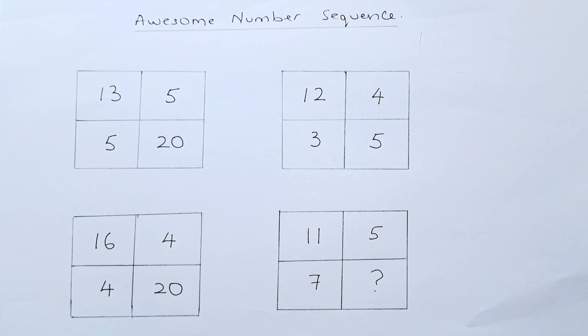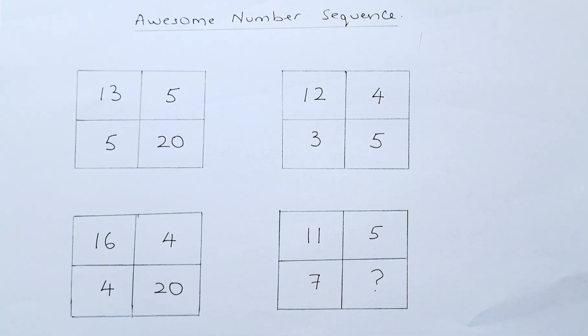In the first box, we have 13, 5, 5, 20. In the second box, we have 12, 4, 3, 5.